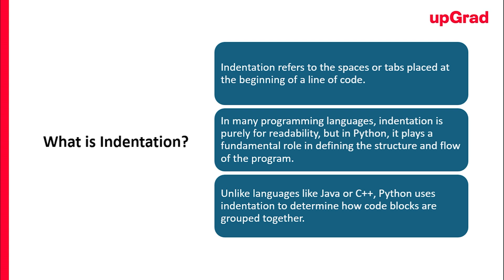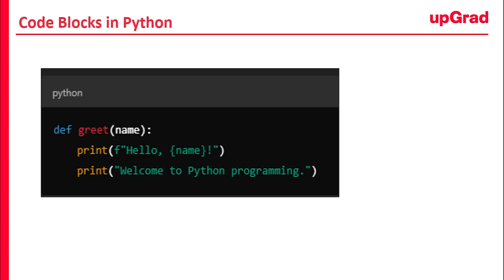The other term I'm going to refer to here is code blocks in Python. In Python, code blocks are sections of code that belong together. These blocks can be a part of functions, loops, conditionals, classes, and more. The indentation level indicates which statements are part of a particular block. For example, the body of a function or the content inside a loop must be indented consistently to show that they belong to that specific block.